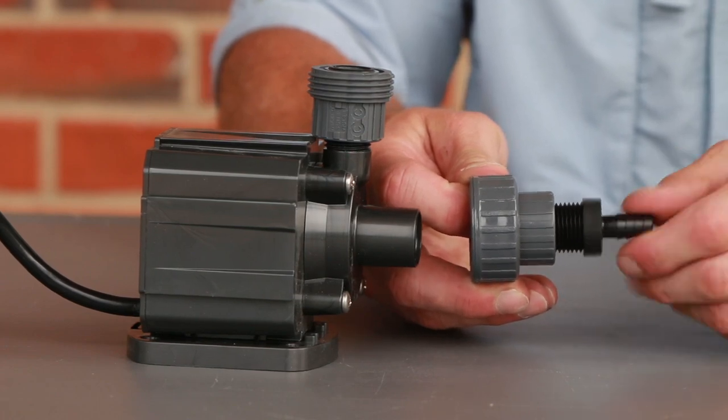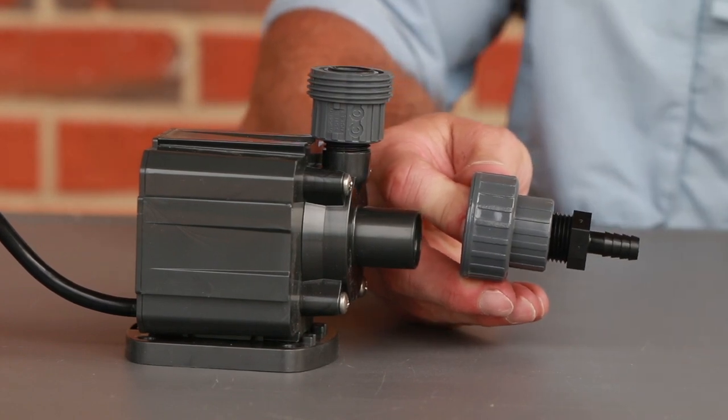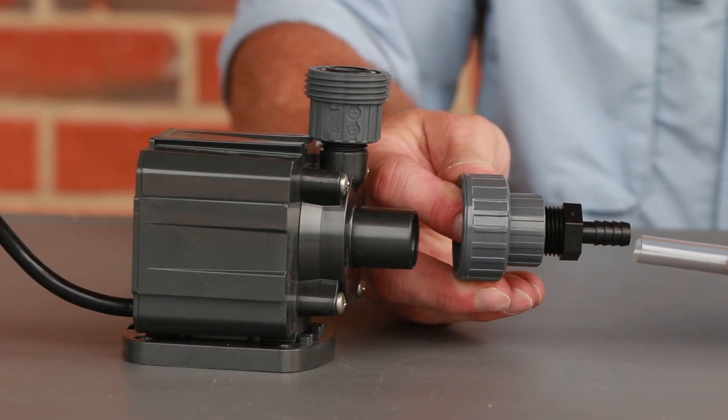On the other half of the union fitting, attach the fitting that has one half inch threads on one side and a three eighths inch barb on the other. Next, connect the three eighths inch flexible tubing.